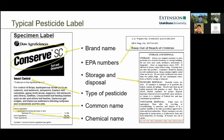The label also includes the EPA registration number, which is assigned to this specific product and label, and must accompany all communication for the product. Near the storage and disposal section, pay close attention: many labels specify that products can't be frozen, can't get too hot, and need to be stored in a ventilated area. Pesticide disposal is also an issue at landfills, as old, unused products accumulate and can be very problematic.